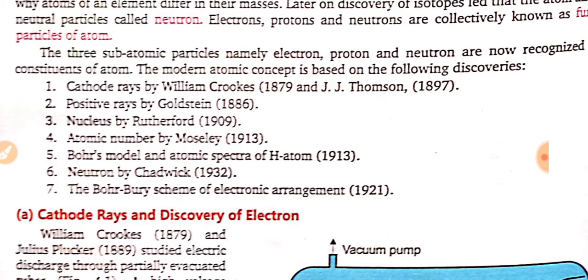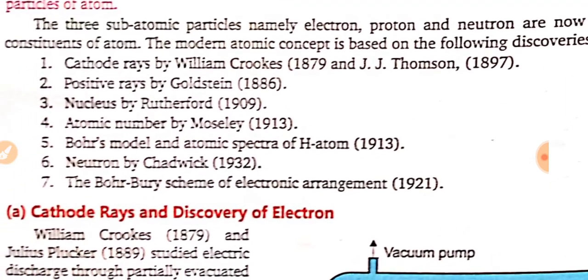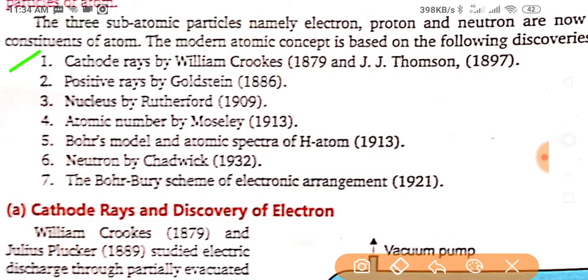The modern atomic concept is based on the following discoveries. First is cathode rays by William Crookes, 1879 and J.J. Thomson, 1897. Positive rays by Goldstein, that is proton. Nucleus by Rutherford. Atomic number by Moseley in 1913. Bohr's model and atomic spectra, which is most widely accepted, it is given in 1913. Neutron by Chadwick. And the Bohr-Bury scheme of electronic arrangement in 1921.